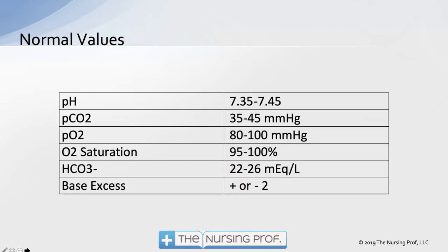Here are our normal values again. pH is 7.35 to 7.45 — a tight range right around 7.4. Normal CO2 is 35 to 45, which may be easy to remember because it shares the same last two numbers as the pH. PO2 is 80 to 100 — this is not a percentage, so it can go higher than 100. O2 saturation 95 to 100 percent. Bicarb 22 to 26. Base excess plus or minus 2.